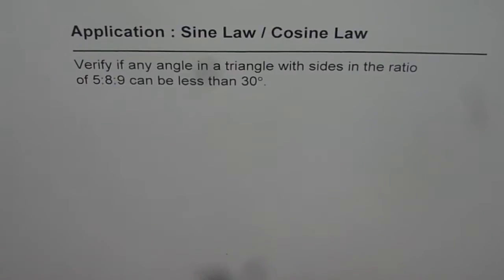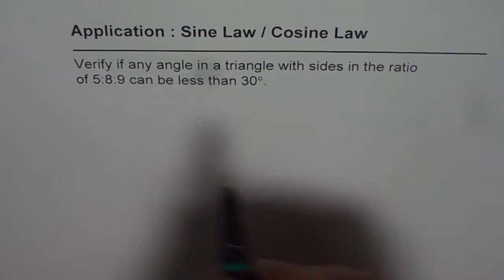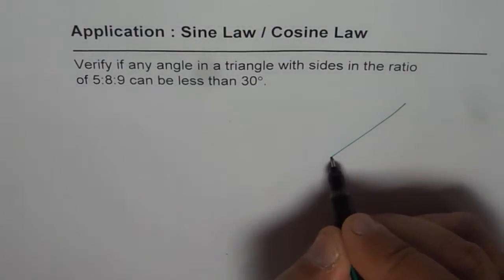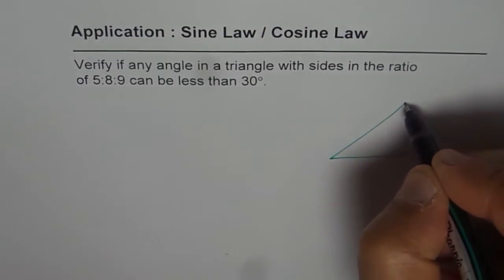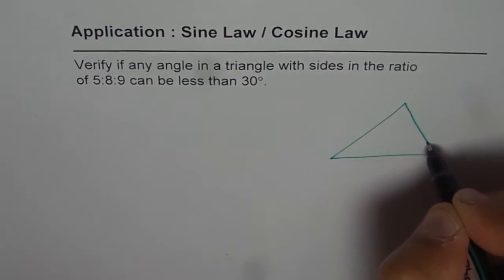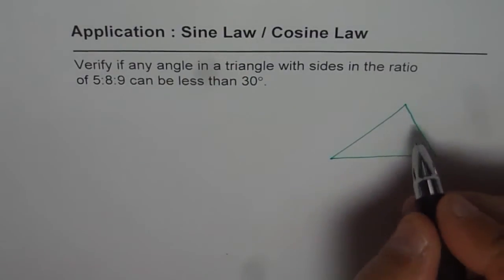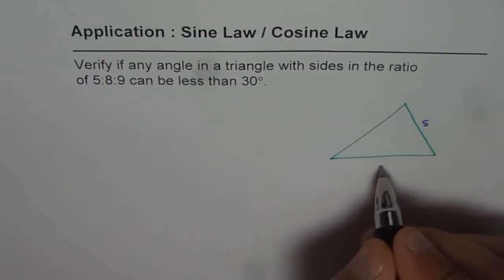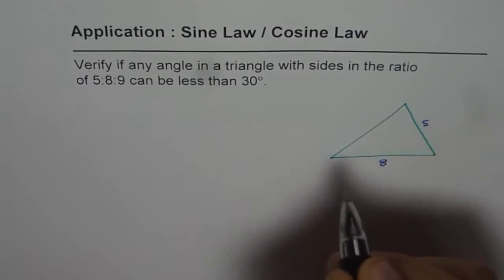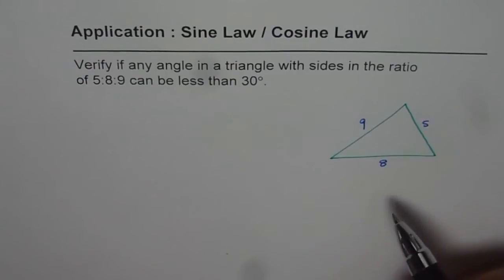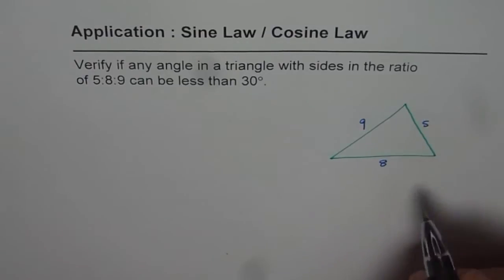Let us assume we have a triangle — let me draw one. This is our triangle with three different sides. They are in the ratio of 5, 8, 9. This side is 5, this is 8, and then 9. So this is a triangle where the sides are in the ratio of 5 is to 8 is to 9.